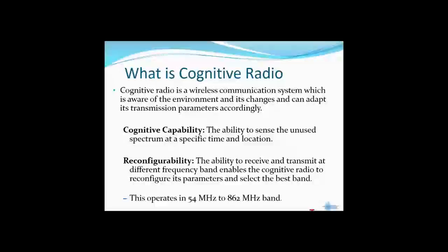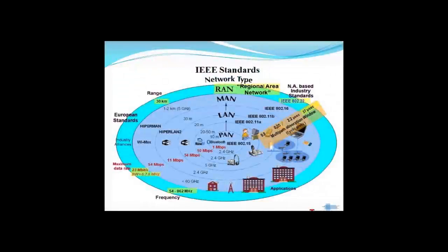As per IEEE 802.22, cognitive radio should work only between 54 MHz to 862 MHz band — that is the TV bands. This is a graphical representation of various networking technologies and their range. The PAN or personal area network consists of Bluetooth and other technologies, and as we go further in distance we can see the regional area network which spans from 30 to 90 kilometers. Cognitive radio networks are actually regional area networks.